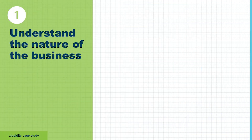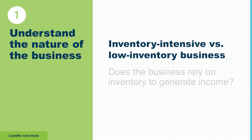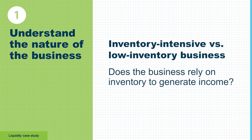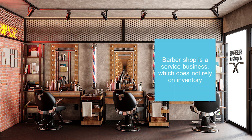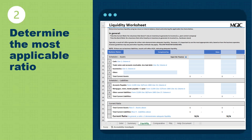Let's look at a liquidity case study. In step one, we need to understand the nature of the business — is it inventory intensive or a low inventory business? If the business relies on inventory to generate income, then it's an inventory intensive business. Consider a barbershop: would you classify this as an inventory intensive business? No — it's a service business and therefore does not rely on inventory to generate income. In step two, since the barbershop is not inventory driven, we would not subtract inventory, and therefore the most applicable ratio would be the current ratio.